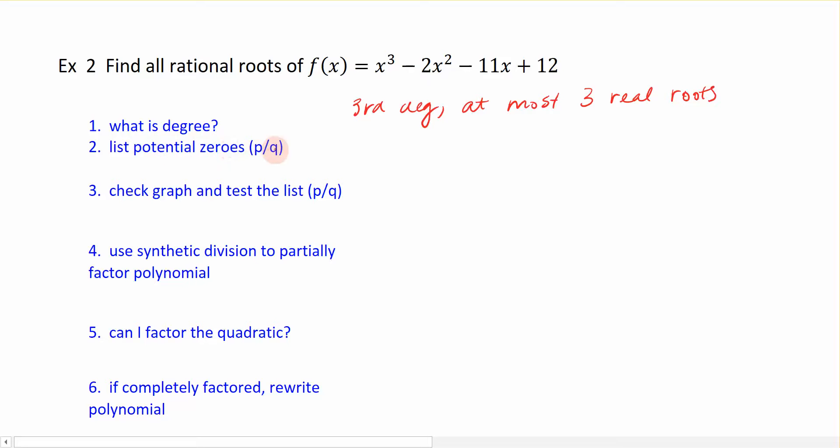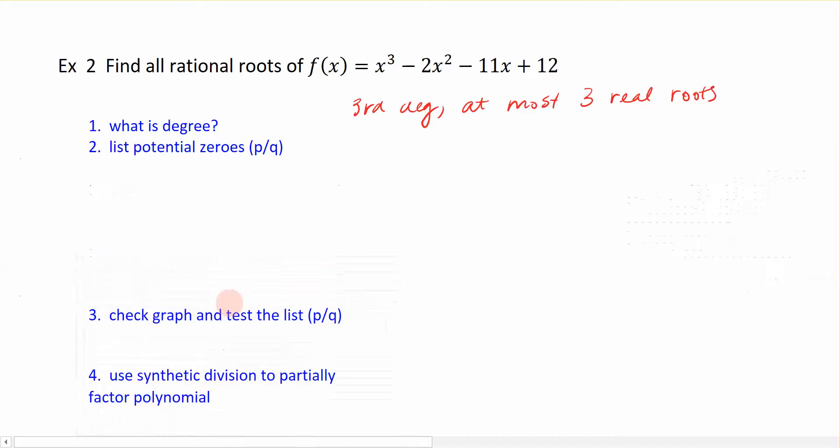Now we want to list the potential zeros of my function, and that's what we practiced in the previous video. To list all of the zeros, we first need to identify all the factors for P, and all the factors for Q. So, for P, I have plus or minus 1, 2, 3, 4, 6, and 12. All of these numbers are the factors of 12. Q is just a 1, plus or minus 1. So, P over Q is going to be just all of the plus or minus this whole list for P's. Plus or minus 1, 2, 3, 4, 6, and 12.